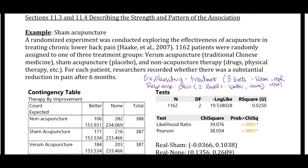The explanatory variable is categorical with three levels: whether they had sham acupuncture, real acupuncture, or a non-acupuncture intervention. The response is whether the reduction in pain resulted in improvement or no reduction after six months.